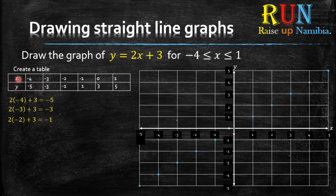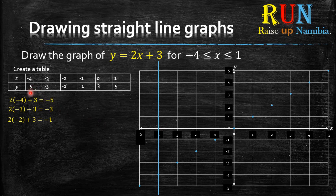Let's start with the first column. For the x value we have negative 4, so go on the x-axis and look for negative 4 — it's over here. Draw a long line through that. For the y value we have negative 5, so go on the y-axis and look for negative 5 — it's over here. Draw a long line through that negative 5. Now check where the two lines cross — they cross over here. That's where you plot your point.